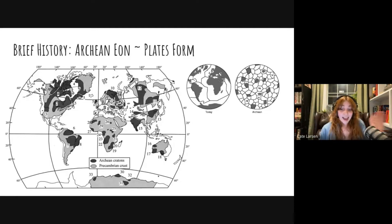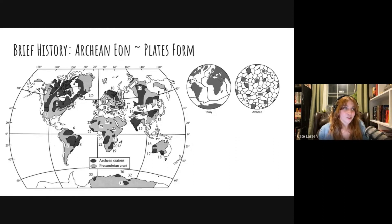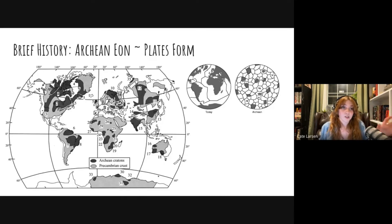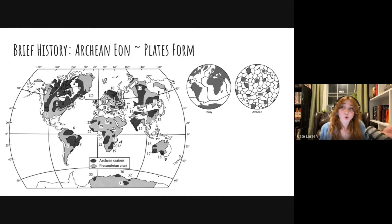Those first tectonic plates led to eventually those different plates having varying interactions — the first mountain building events, the first collisions. And then around 1 billion years ago, we had the first super continent, because there were super continents before Pangaea. Pangaea is not the end all be all — it's not the only super cool one.